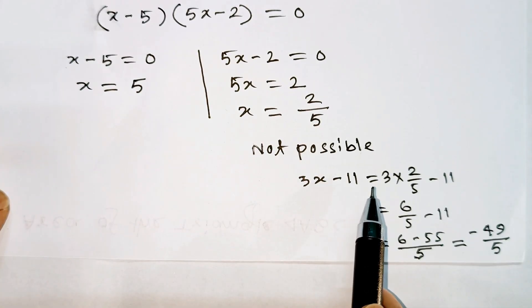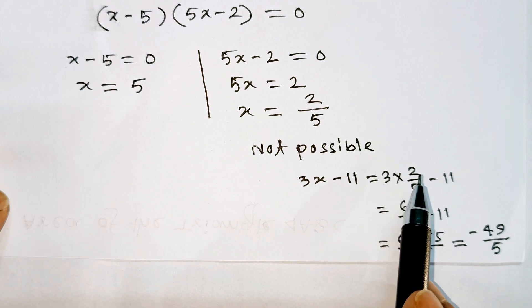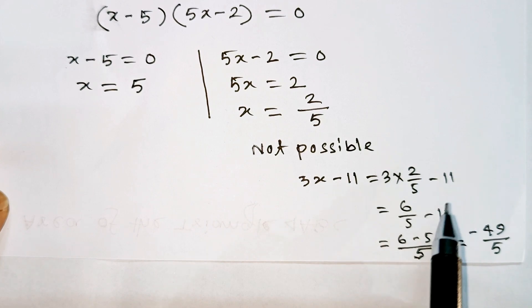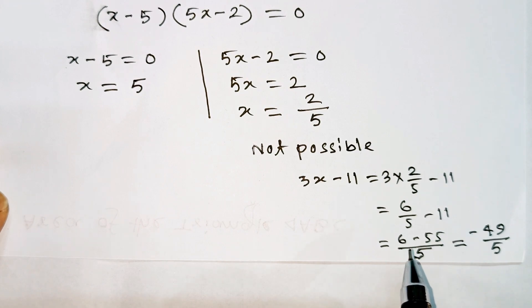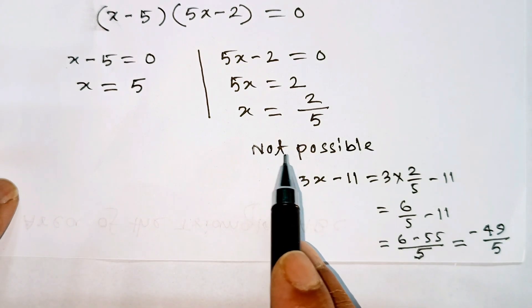Testing x equals 2/5: 3x minus 11 equals 3 times 2/5 minus 11, which equals 6/5 minus 11, equals (6 minus 55)/5, equals negative 49/5. But a side cannot be negative, so this is not possible.